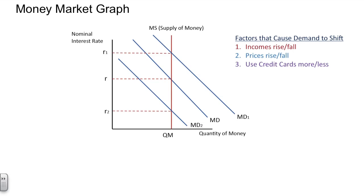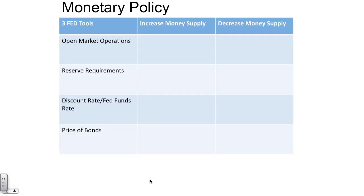Fundamentally, whether we're looking at the change in money supply or the change in money demand, what we're really talking about is a change in the overall nominal interest rates in the economy. If the Federal Reserve chooses to increase the money supply and adopt expansionary monetary policy, they would buy bonds — also known as an easy money policy, making credit more accessible and easier to obtain. If they chose to decrease the money supply, they would sell bonds, making it more difficult to obtain credit.